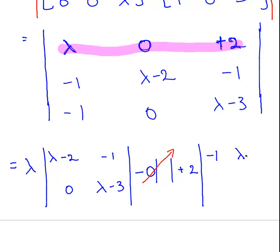That's because it's the second element here there. And then plus 2 times the sub-matrix for that last element there: minus 1, lambda minus 2, minus 1, and 0.